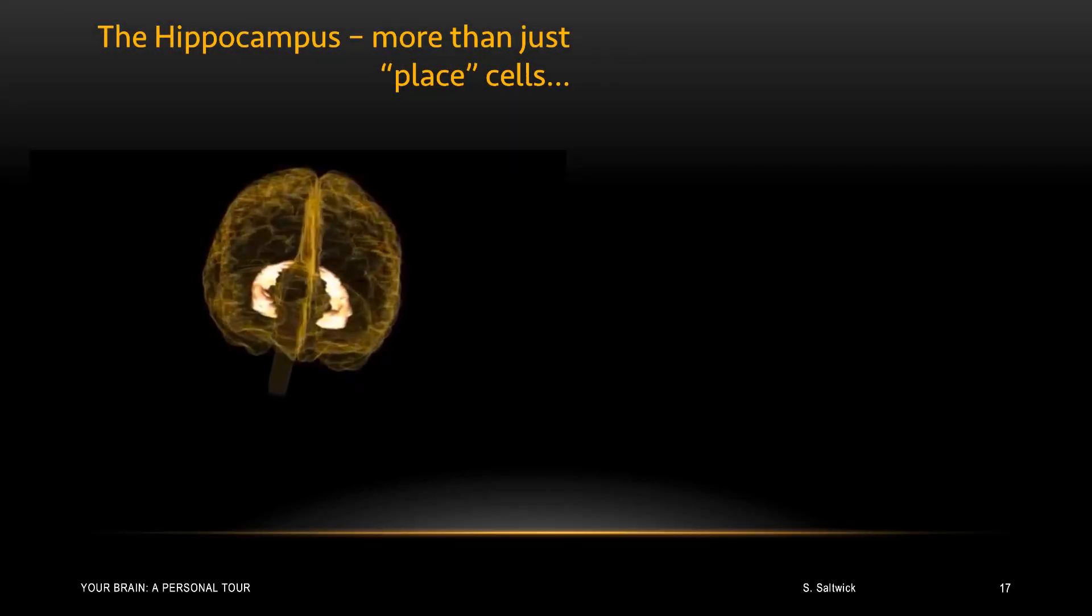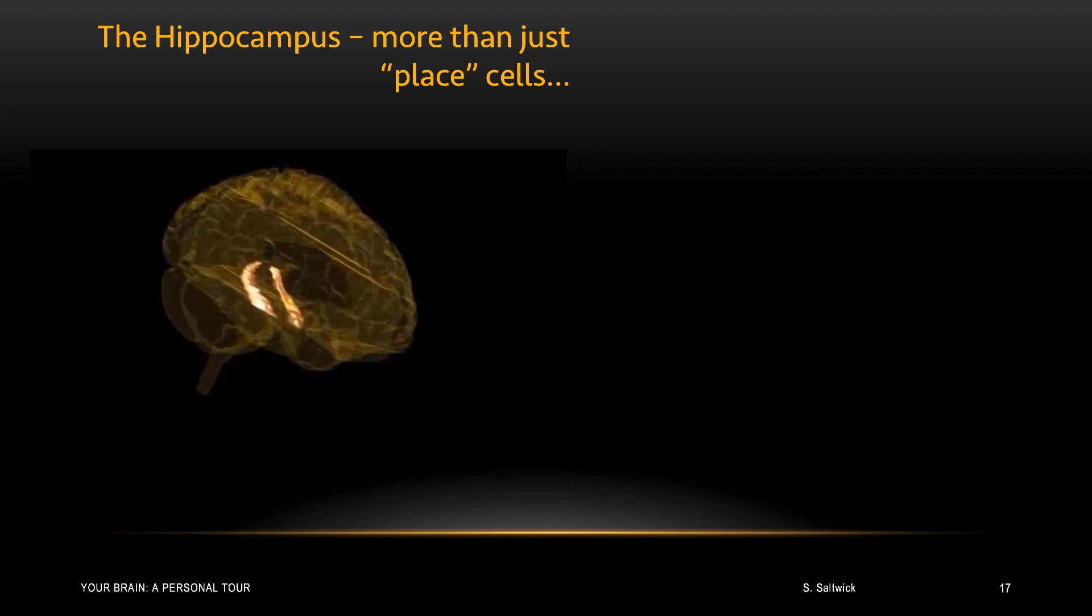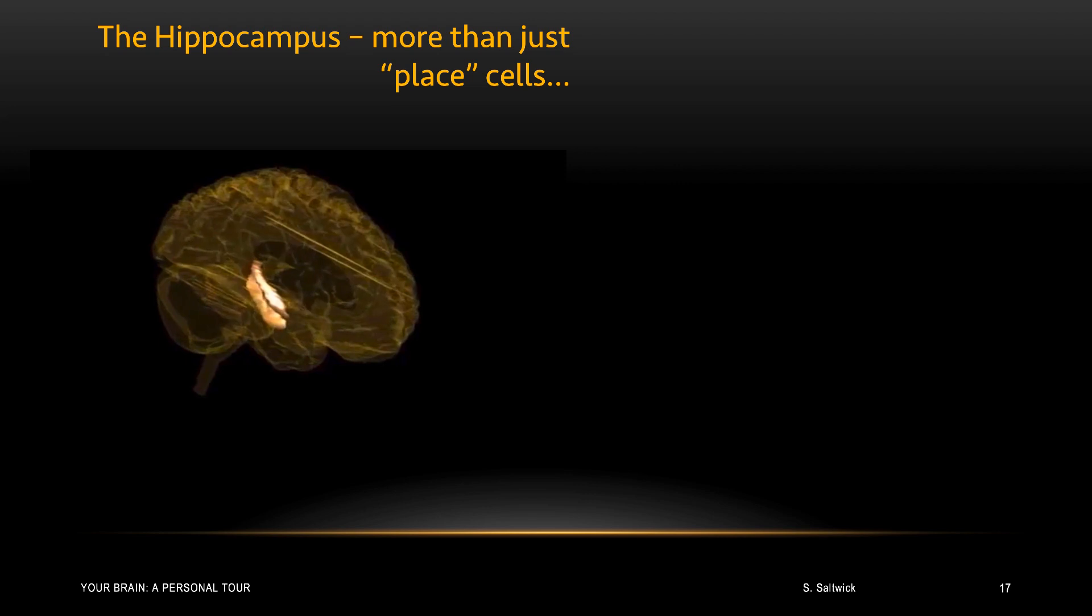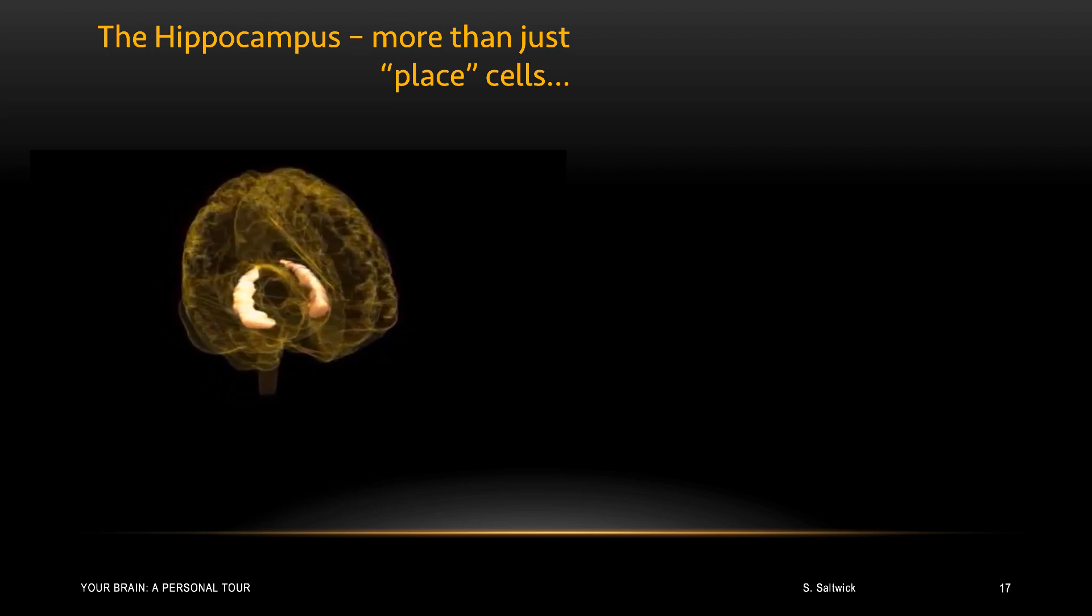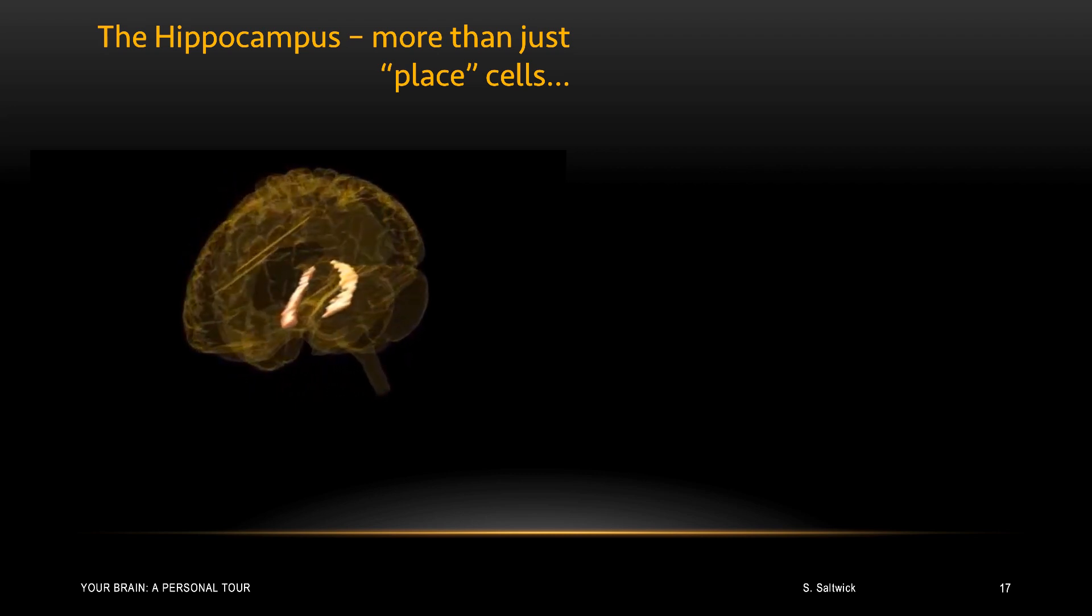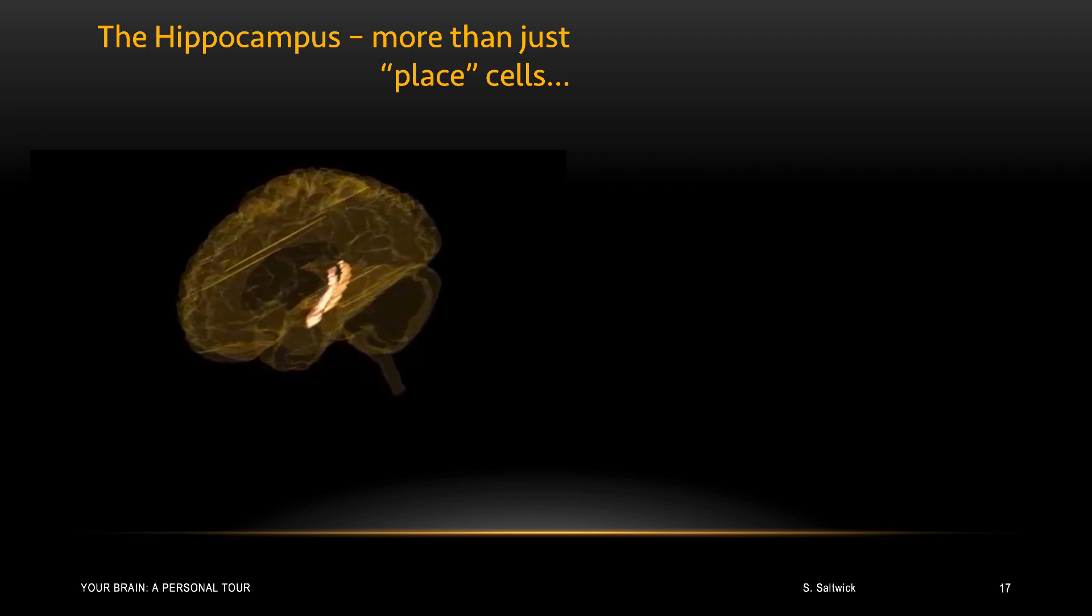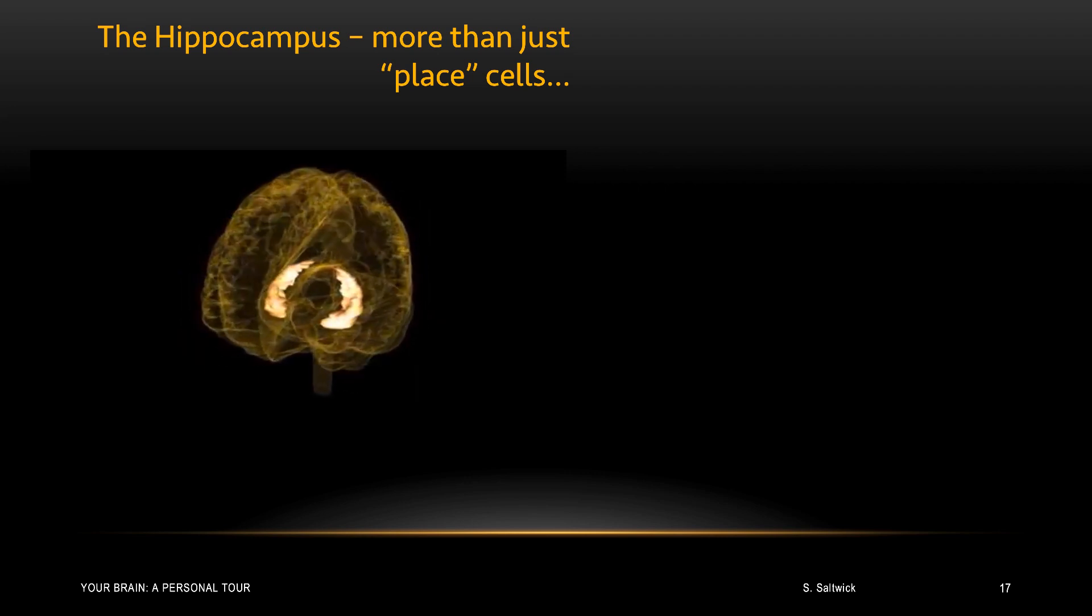Recall we looked at the hippocampus and found there were unique neurons within the hippocampus called place cells. Those cells fired when an animal was at a particular point of space. Well, it turns out that the hippocampus is much more than place cells. We'll look at that in this section of the seminar. To make a long story short, the hippocampus is essential for what is called episodic memory.